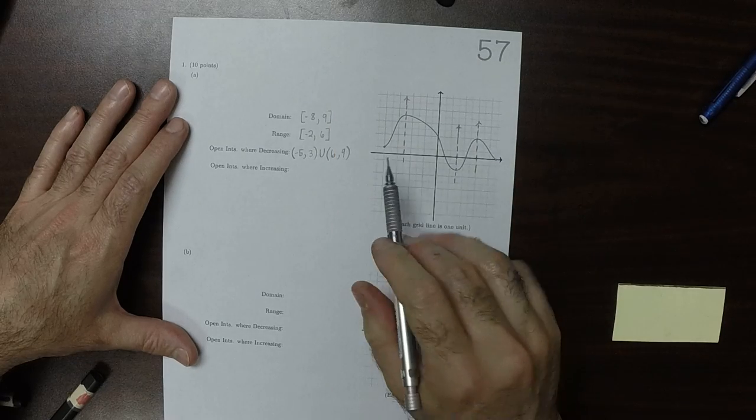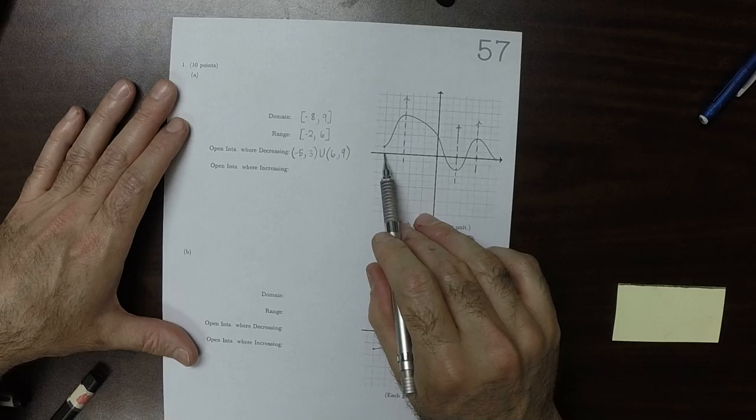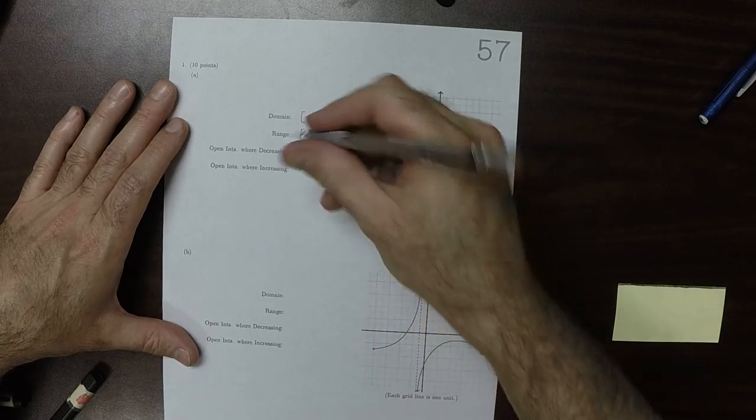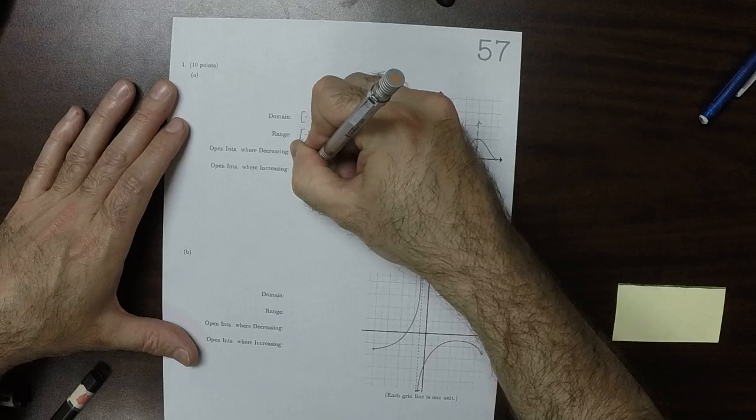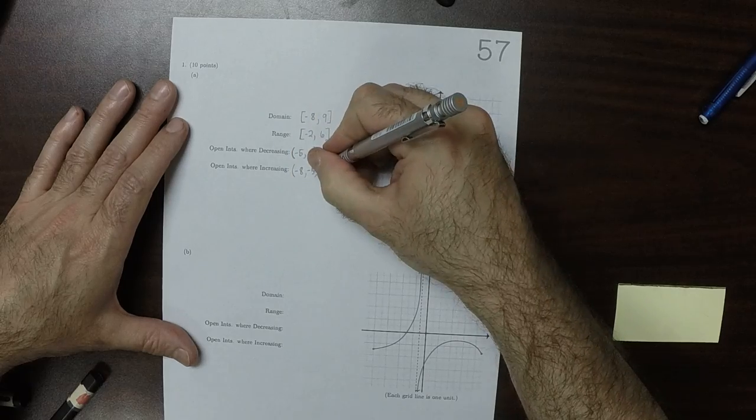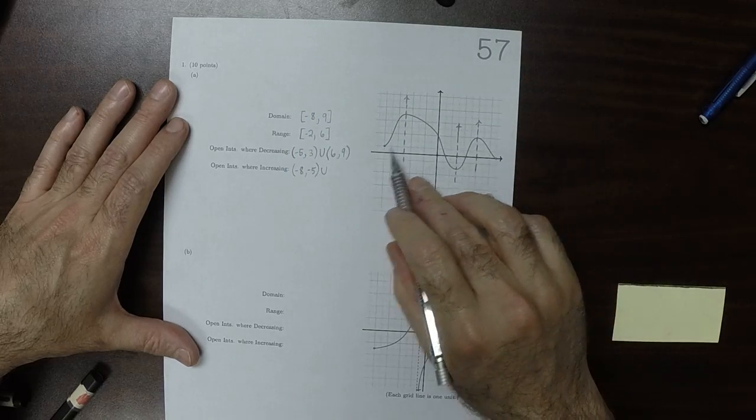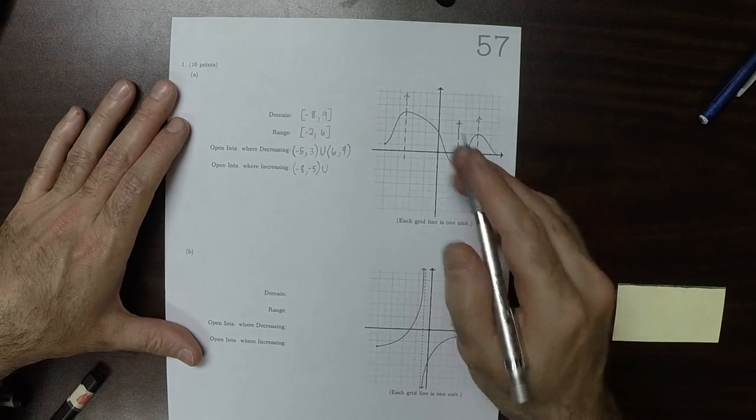And then where is it increasing? From negative 8 to negative 5, union 3 to 6.